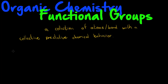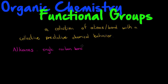The first one we are going to look at is called alkanes. Alkanes have the following structure — they have single carbon bonds and hydrogens.